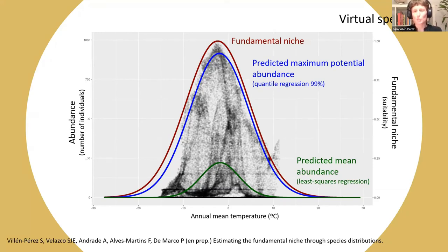This is a work in progress. These are preliminary results, but they are suggesting that we may be able to estimate the fundamental niche of the species through correlations, through correlative data, which would be very interesting.